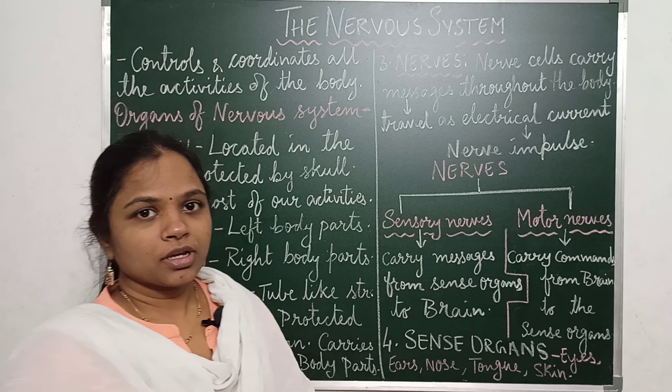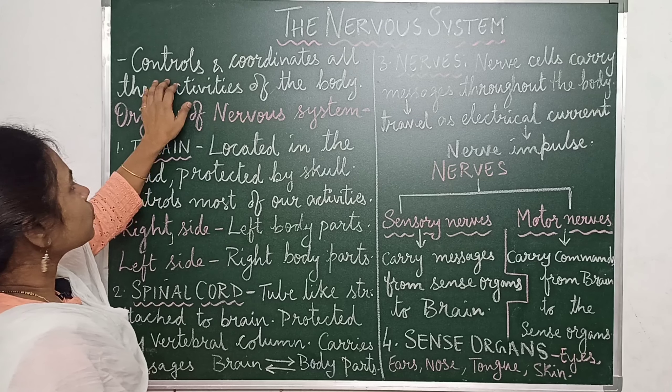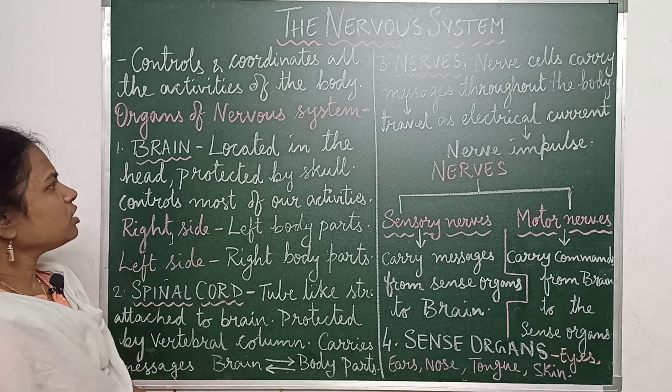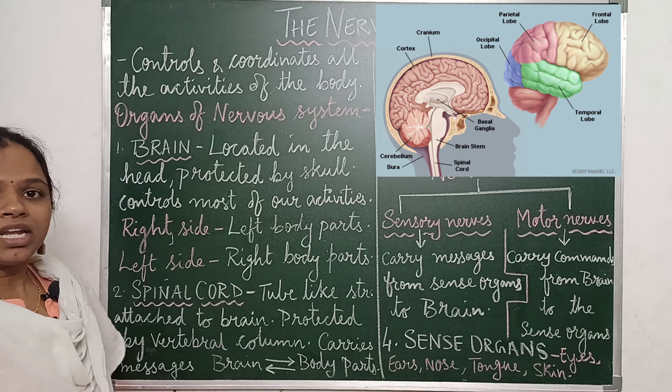Namaste. In class 6 science today we are going to learn about the nervous system. The nervous system controls and coordinates all the activities of the body. There are different organs consisting in this nervous system — the brain, the spinal cord, the nerves, and also the sense organs. These four are the different organs which actually consist of the nervous system.